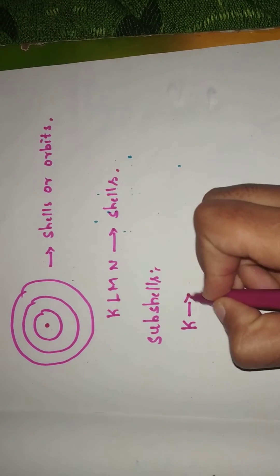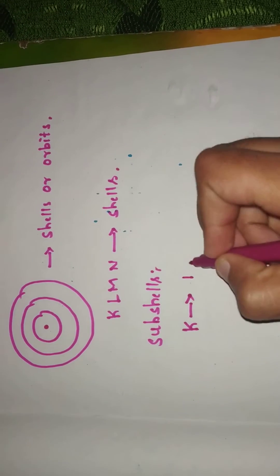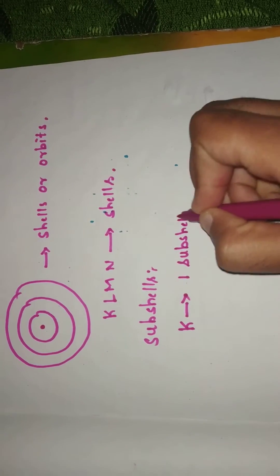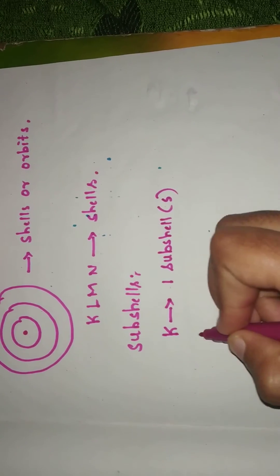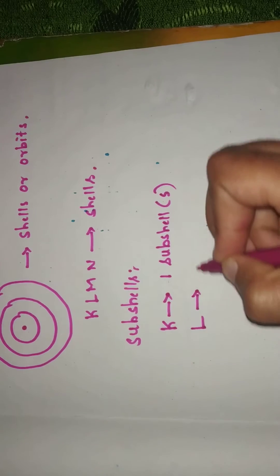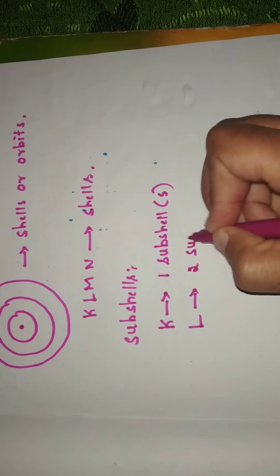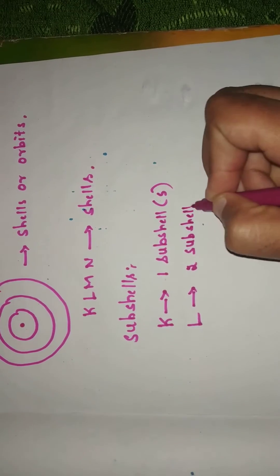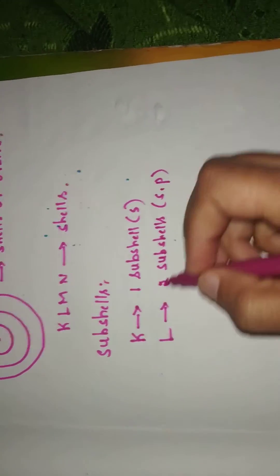K shell consists of only one subshell, that is S. L shell consists of two subshells: S and P.